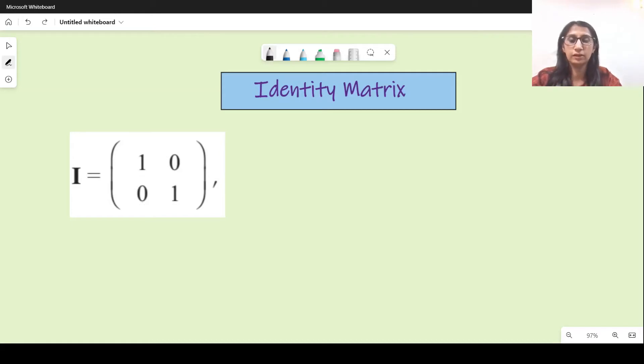Now this matrix has some special properties, one of which is that if you find the inverse of this matrix, it is going to be one zero zero one itself. That means I and I inverse, they're the same matrix, they do not change.